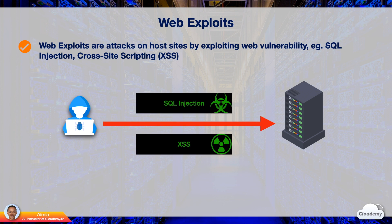Many open-source-based websites often fall victim to these web exploits. You can detect and prevent common web exploits by placing a web application firewall in front of the web servers to block certain traffic with suspicious request patterns.